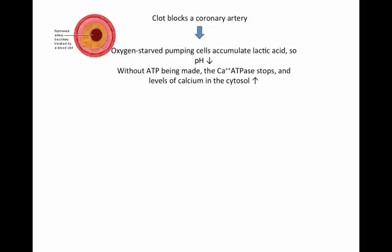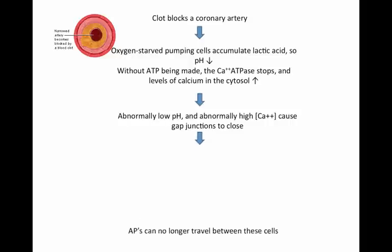So the calcium levels in the cytosol start to increase. Now we have an abnormally low pH and an abnormally high concentration of calcium in those cells. And this causes gap junctions to close — two different signals cause gap junctions to close.